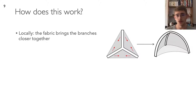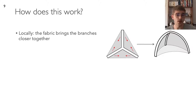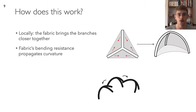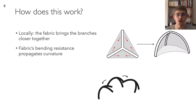First, there's a local effect. At the scale of one star, the fabric, while trying to go back to its original form, brings the branches closer together, which is not possible to realize in the plane, so the star buckles out of plane to resolve this constraint. Then there is a global interaction between neighboring stars, due to the fact that they are all stuck to the same piece of fabric. Since this fabric has a finite thickness, the curvature of one star can propagate to its neighbors through bending.